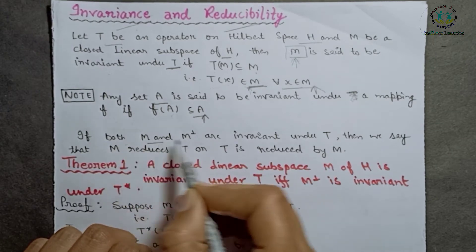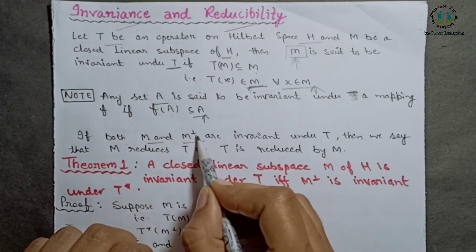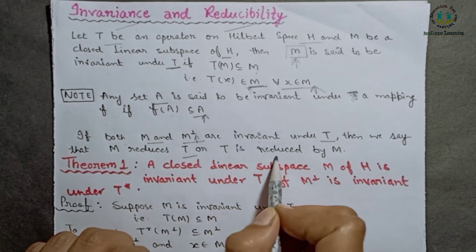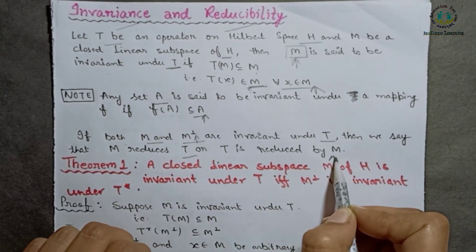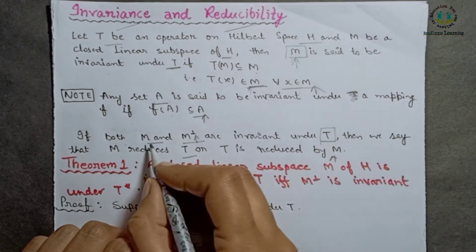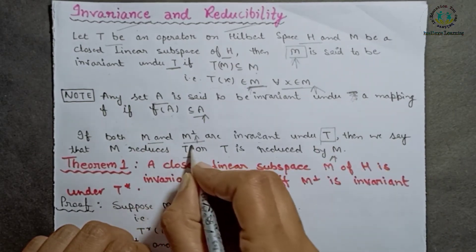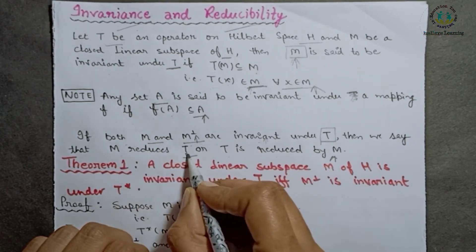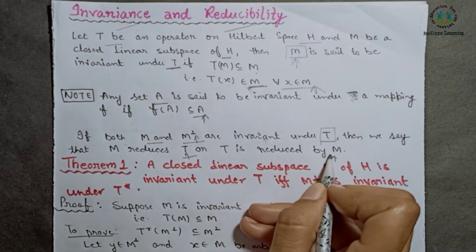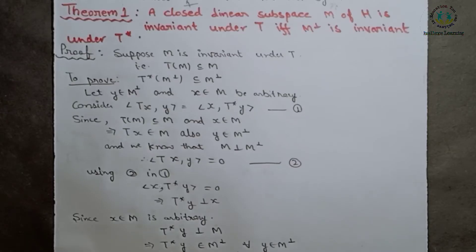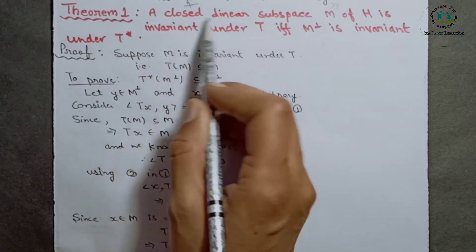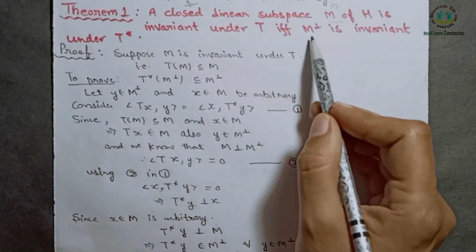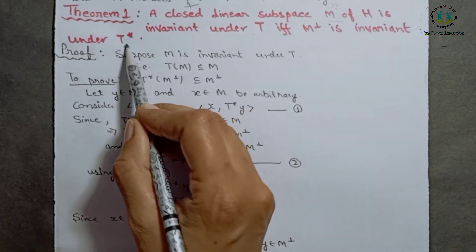And if both M and M orthogonal are invariant under T, then we say that M reduces T and T is reduced by M. Theorem 1: T(M) is invariant under T if and only if M orthogonal is invariant under T star.